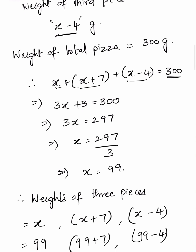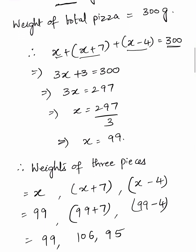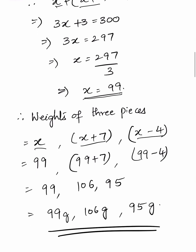x equals 297 divided by 3, so x equals 99. The weights of the three pieces are x, x plus 7, and x minus 4. Substituting x equals 99, the three pieces weigh 99, 99 plus 7, and 99 minus 4 respectively. Therefore, the actual weights are 99, 106, and 95 grams.